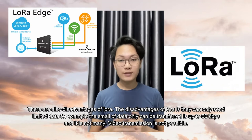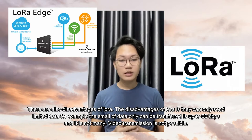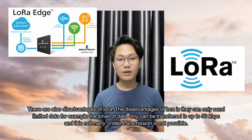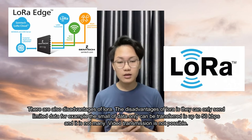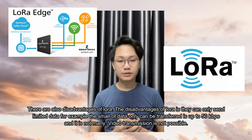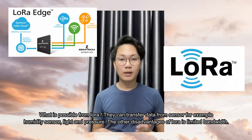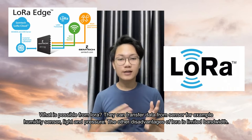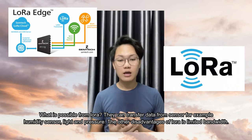There are also disadvantages of LoRa. The disadvantages include that it can only send limited data — the maximum data rate is up to 50 kbps, which is not very much. Video transmission is not possible. LoRa is suitable for transferring data from sensors, for example humidity and light pressure sensors. Another disadvantage of LoRa is limited bandwidth.